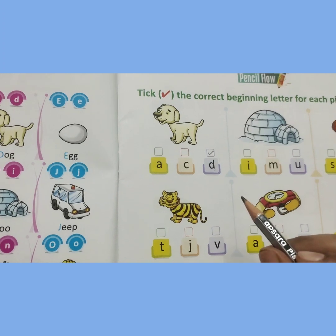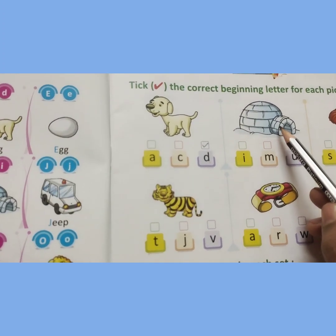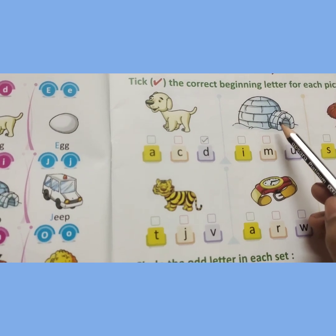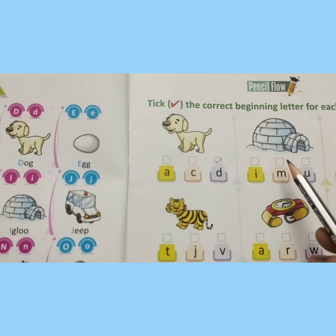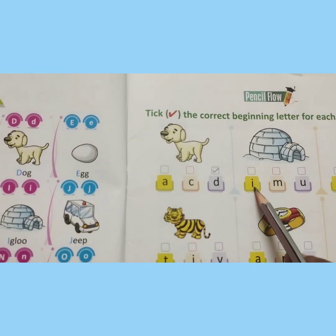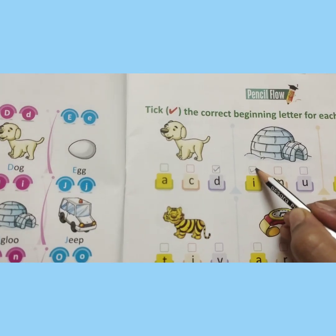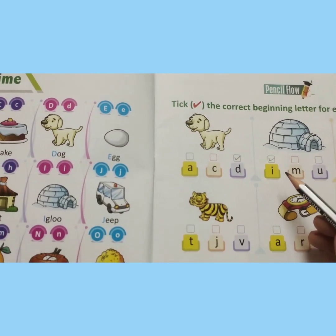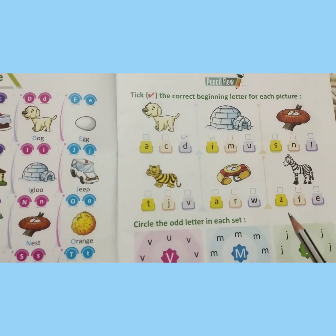The second picture is igloo. What is this? It is igloo. What is the spelling of igloo? I, G, L, O, O. Igloo. The first letter of igloo is I. So we will put a tick on I. Like that, all of you do the rest of the work.